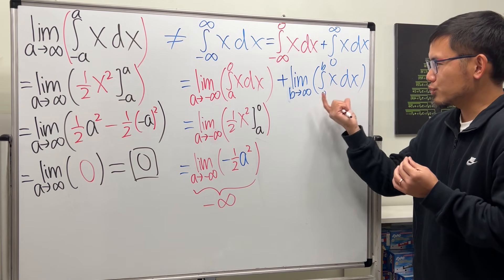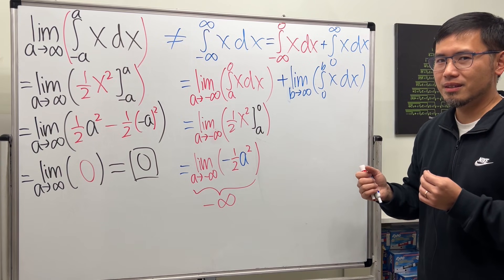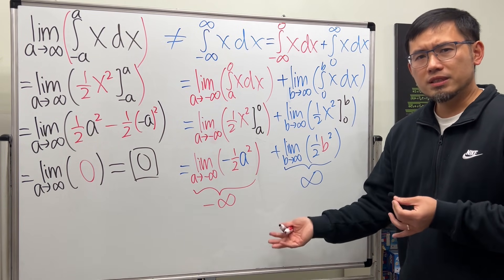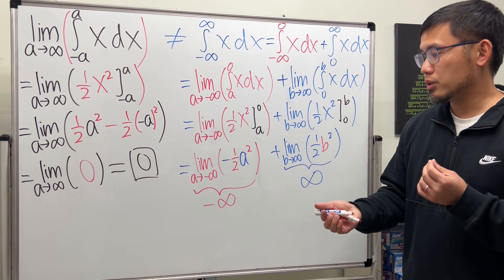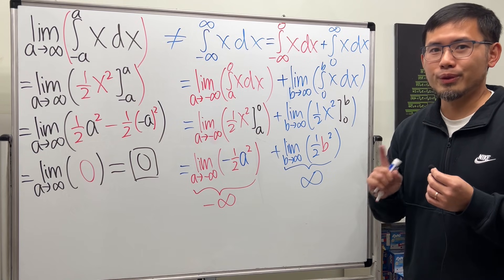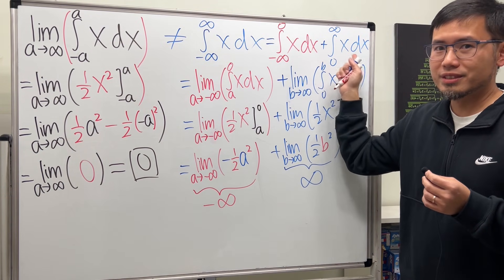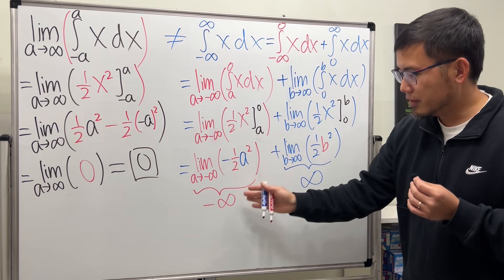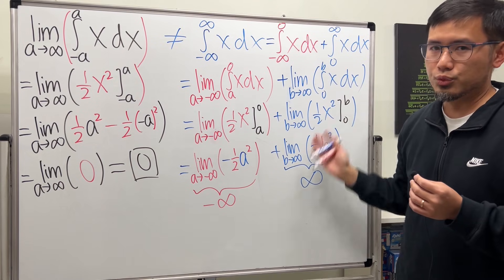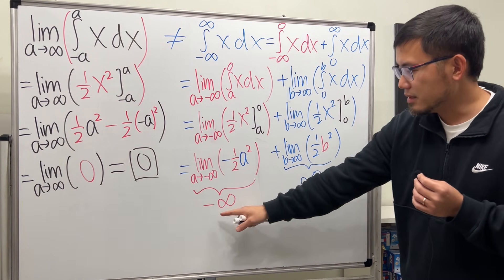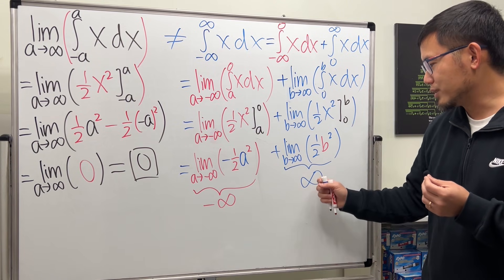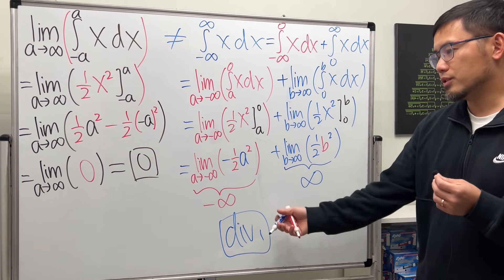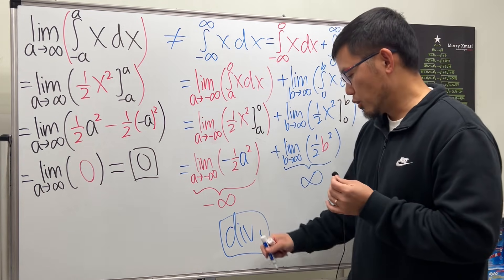You might be wondering: this part gives negative infinity and the other gives positive infinity — can we combine them? No. Once we've broken this into two separate integrals, each is its own limit question. If one diverges, the whole integral is ruined. You don't need to evaluate the other part. The answer is: this integral diverges.